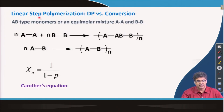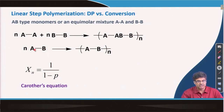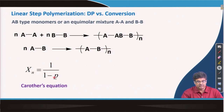In the last lecture, we discussed how we can control the molecular weight with conversion, or how degree of polymerization is related to conversion. We started with a simple system where either we have taken an AB type monomer where the molar ratio of two functional groups is always 1:1, or we have taken two monomers — AA type and BB type — in an equimolar mixture. In that case, we found that degree of polymerization is related to conversion by this equation, which we call the Carothers equation.